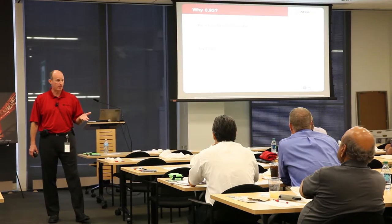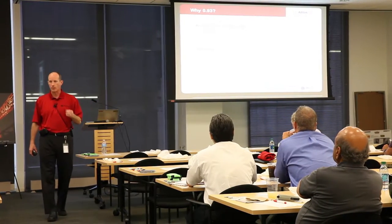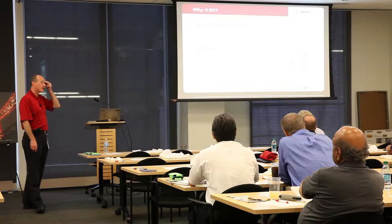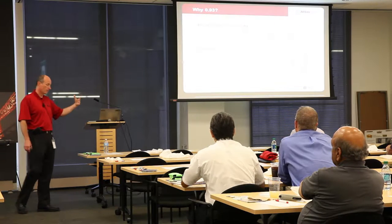We're going to start with something that doesn't sound much like connections: why 0.93? The factor 0.93 is defined in AISC as what you apply to the nominal wall thickness to arrive at the design wall thickness. If you look at the design tables in the current AISC manual, you'll see a column for T and a column for T_des. For a half-inch wall, T_des is 0.465, and that ratio is 0.93. The properties associated with HSS are reduced, and they're all in tabular form, so let's investigate where this came from.